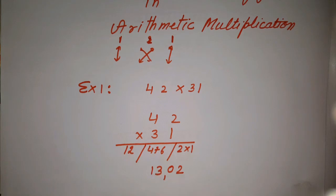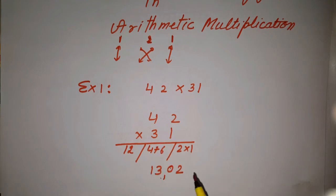Another way: one times one equals one. Four times three times two gives six. Four plus six equals ten. Ten gives zero with one carry. Four times three equals twelve. Twelve plus one equals thirteen. So the answer is one, three, zero, two.